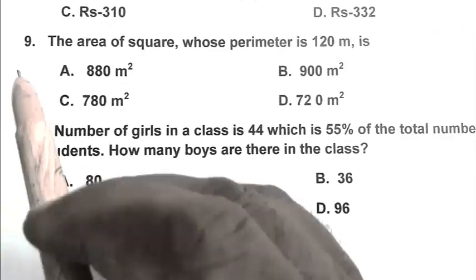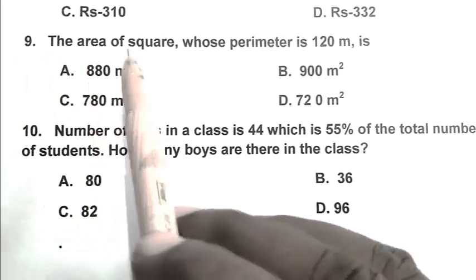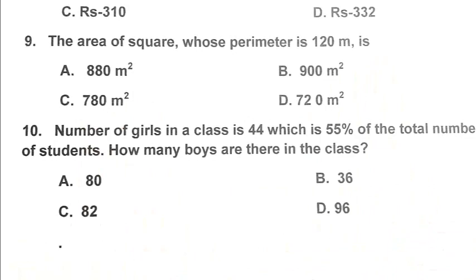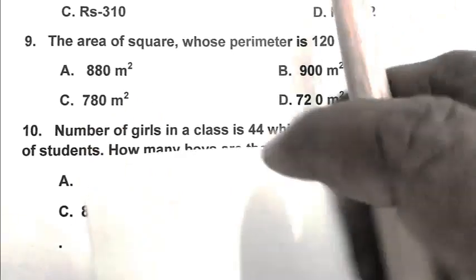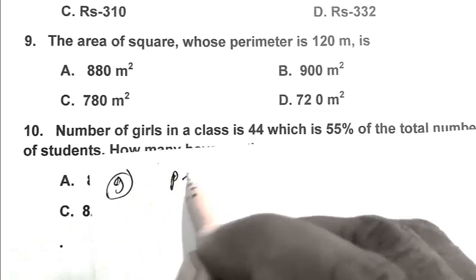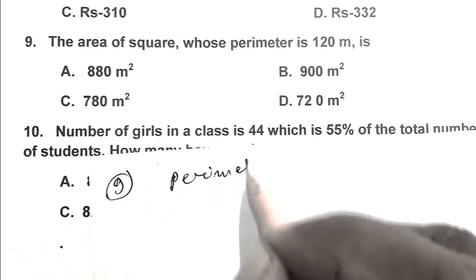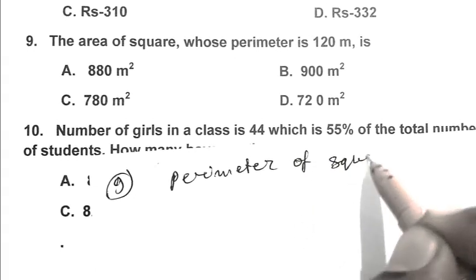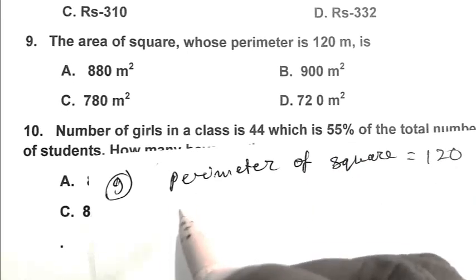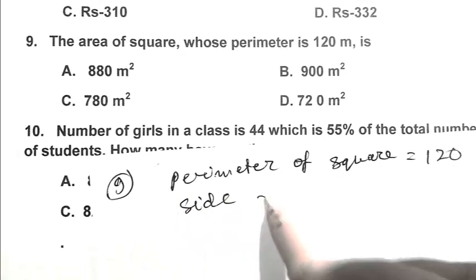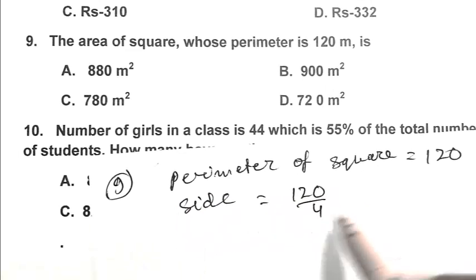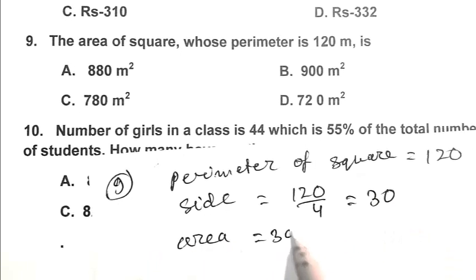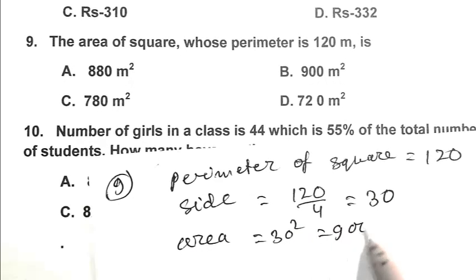Question number 9: The area of a square whose perimeter is 120 meters is? Perimeter of square is 120, so side equals 120 upon 4, which is 30. Area equals 30 squared, that is 900 square meters. So B is the right answer.